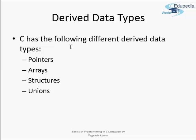C has the following derived data types: pointers, arrays, structures, and unions.